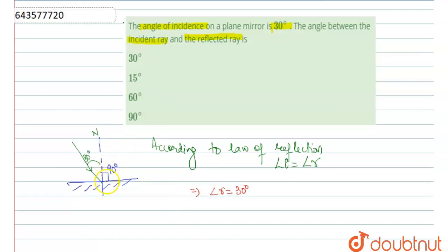So after reflection, the reflected ray also makes 30 degrees with the normal. In the question,